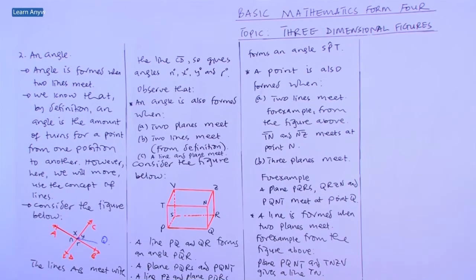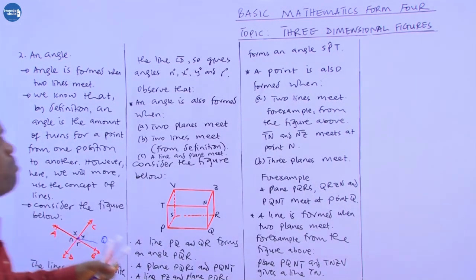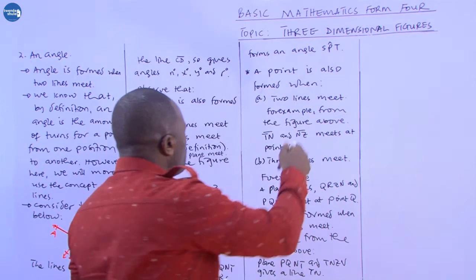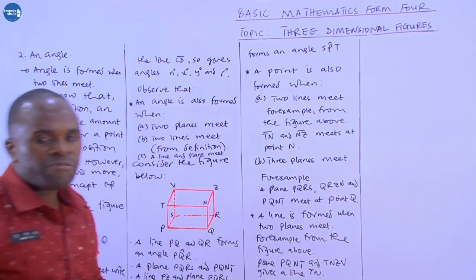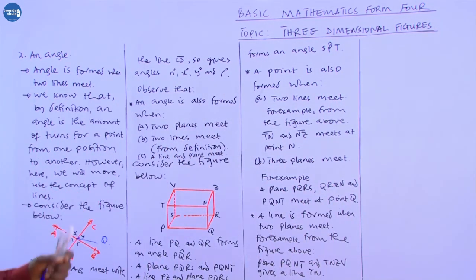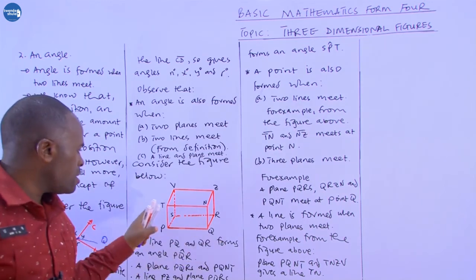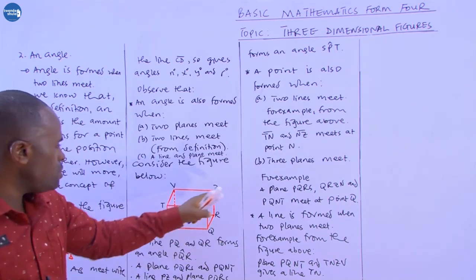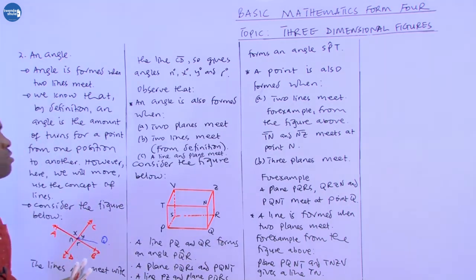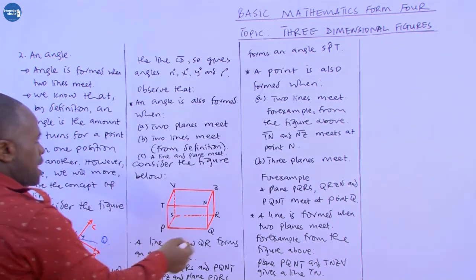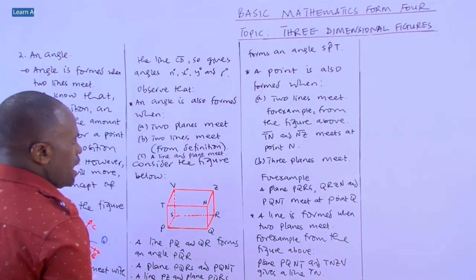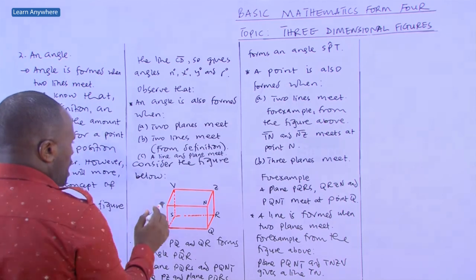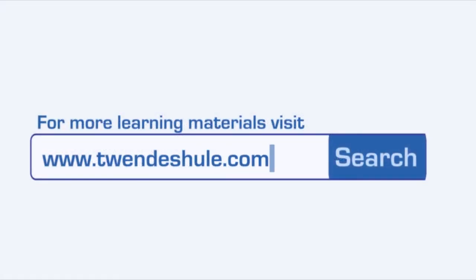A point is located where two lines meet. As we said, points are dimensionless constants. For example, from this figure, line TN meets at a point, showing how points arise from intersecting lines.